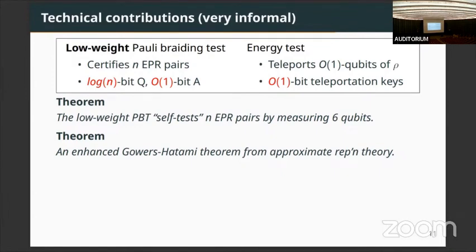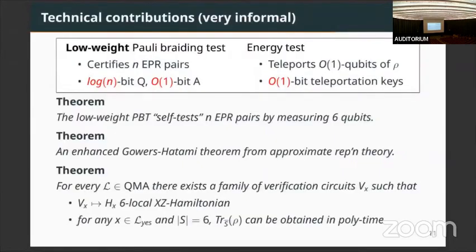The idea is that the canonical optimal strategy for the low-weight poly-grading test forms a representation of the Pauli group, or Weyl-Heisenberg group, which is a finitely presented group. Any near-optimal strategy satisfies all those group relations approximately. The Gowers-Hatami theorem tells you that if you satisfy all those relations approximately, then you can find the exact representation nearby — and this exact representation is the thing you want to test. For the purpose of zero-knowledge, we use the technique called simulatable codes given by Coladangelo-Yuen-Slofstra to show that in this energy test, because you only teleport a small number of qubits, it's very easy to simulate the reduced density matrix.